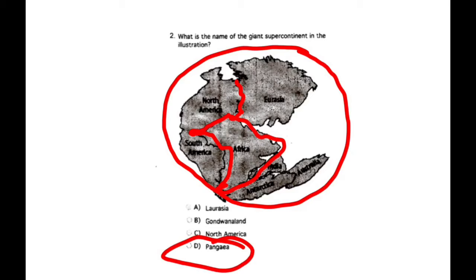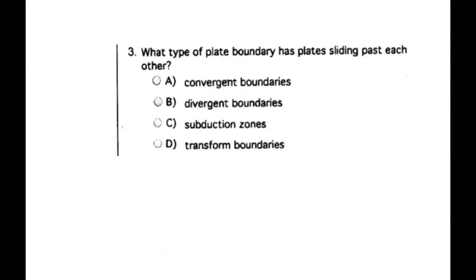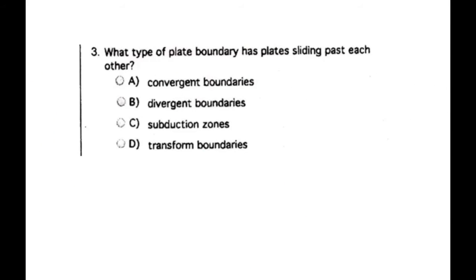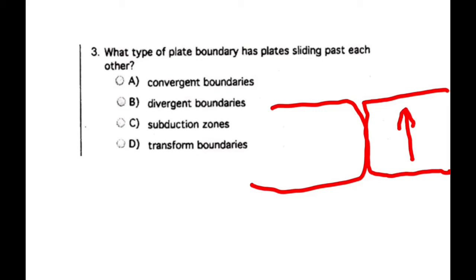Number three, what type of plate boundary has plates sliding past each other? So if I've got one plate here and I've got one plate here, and this plate starts moving this way and this plate is moving that way, they're going to scrape across each other. They're not going to run into each other, they're not going to pull away, they're going to move sideways. We call this a transform boundary.